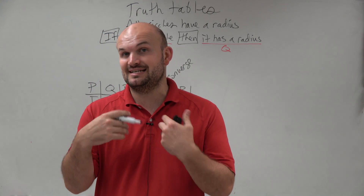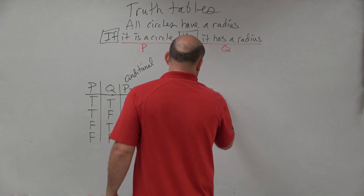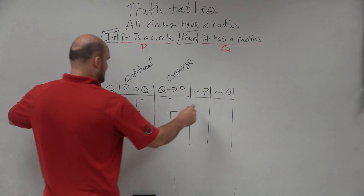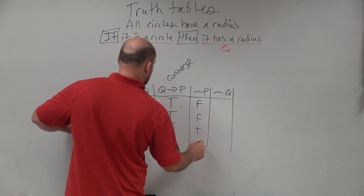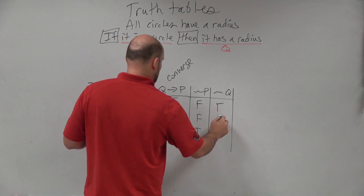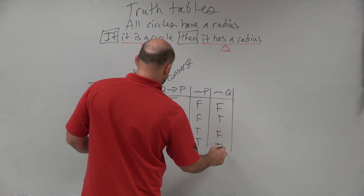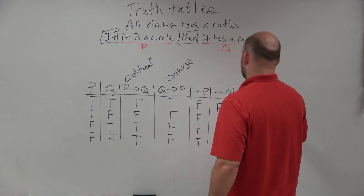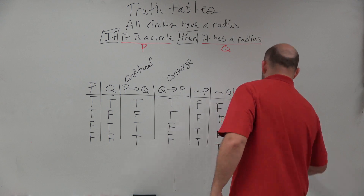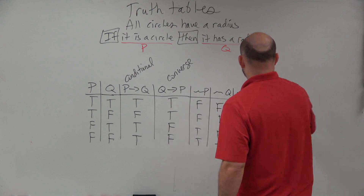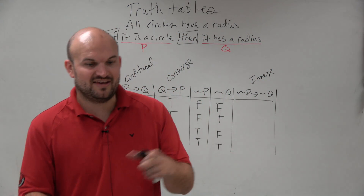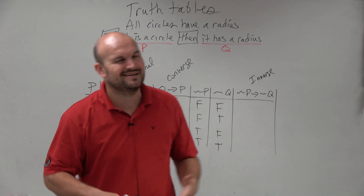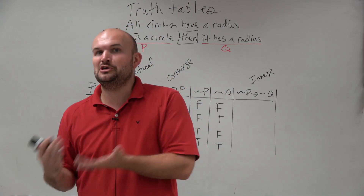To get to the inverse, we negate both parts using the tilde symbol. The opposite of p gives us false, false, true, true, and the opposite of q gives us false, true, false, true. The inverse is if not p, then not q. It's much easier to represent these as p and q than to write out 'if it is not a circle' or 'if it does not have a radius' every time.